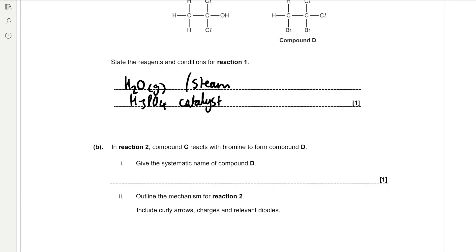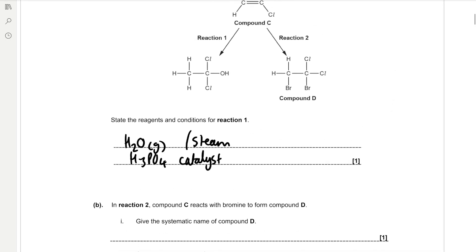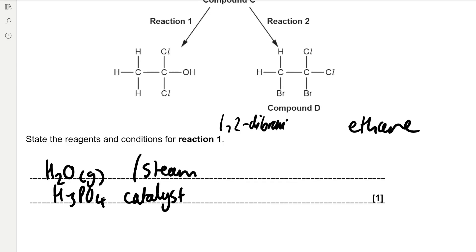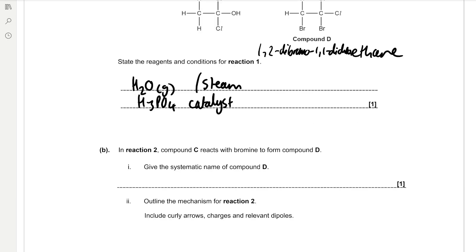In reaction 2, compound C reacts with bromine to form compound D. Give the systematic name of compound D. We've got two bromine groups and two chlorine groups, and only two carbon atoms, so it's going to be an ethane subchain. We need to name alphabetically: the bromines are in different positions, so it's 1,2-dibromo. Then since B comes before C, we have chloro afterwards, and it's 1,1-dichloro. So that gives us 1,2-dibromo-1,1-dichloroethane.